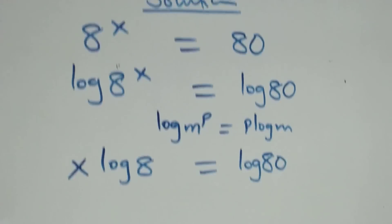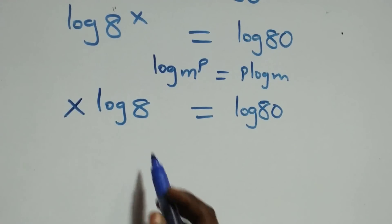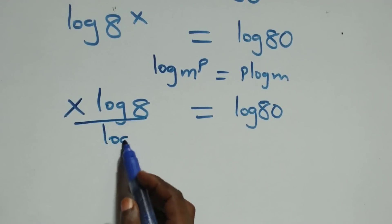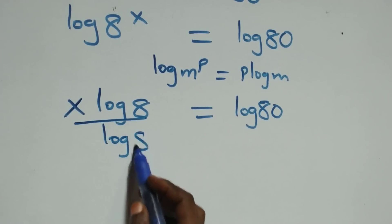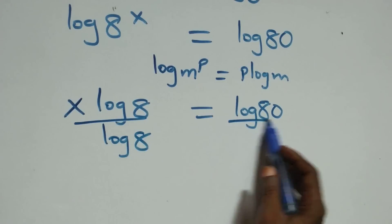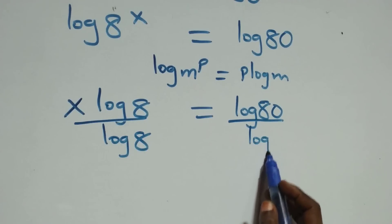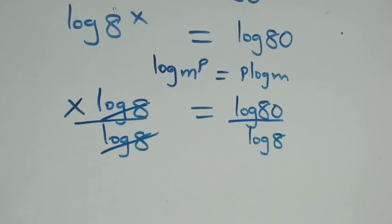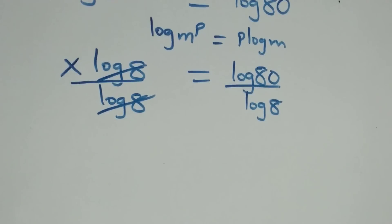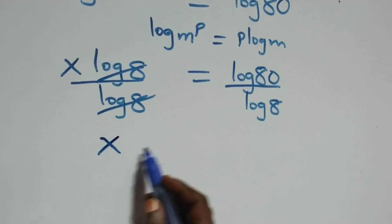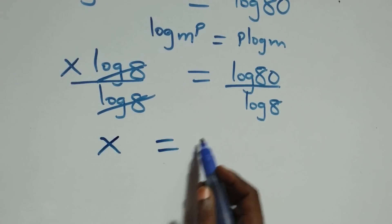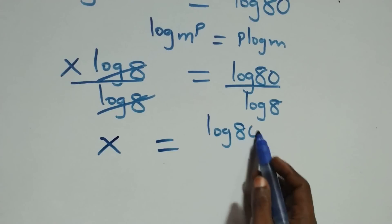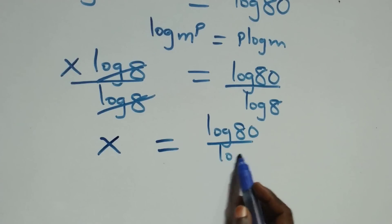Next, we divide both sides by log 8. On the left side, log 8 cancels, leaving x, which equals log 80 over log 8.